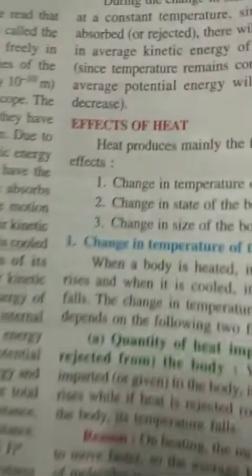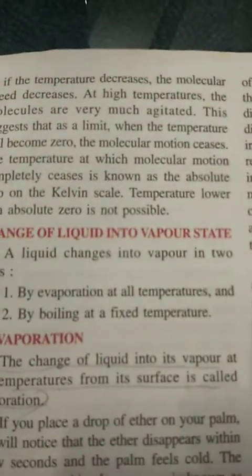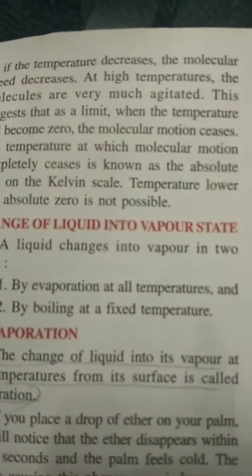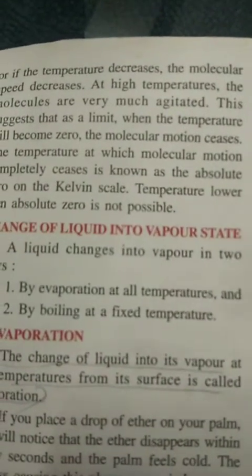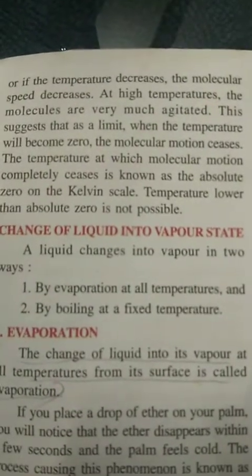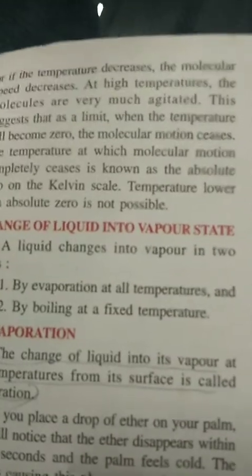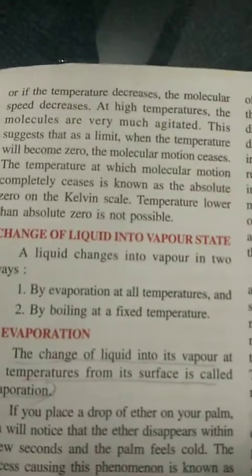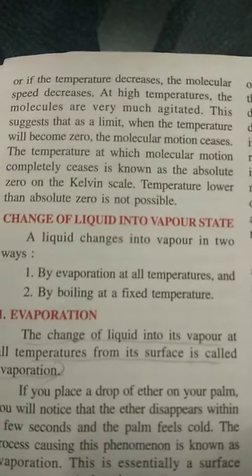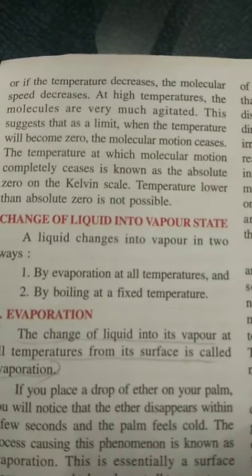The next part is the effect of temperature on molecular motion. When a body such as water is given heat, its molecules start coming into random motion, which represents kinetic energy. At high temperatures the molecules are very much agitated and the substance may start boiling. This suggests that as a limit, when the temperature becomes zero, the molecular motion ceases.